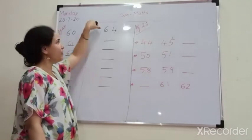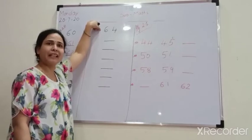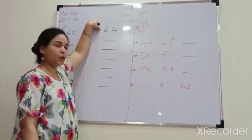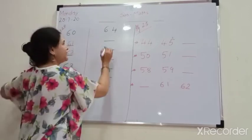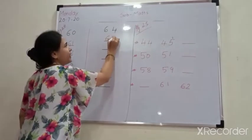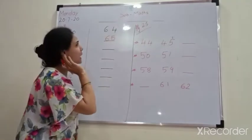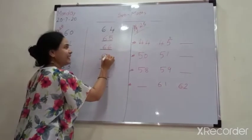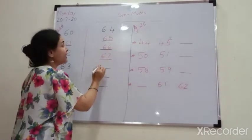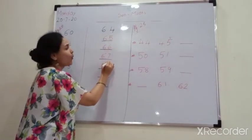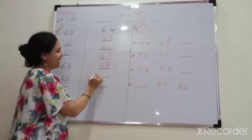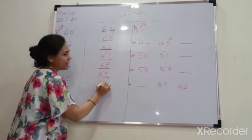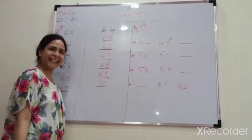Now, next line. First number given to you is 64. So, if I ask you, after 64, which number will come? 65. Then next is 66. Then 67. Then 68 — very good. Then 69. And then, last number will come? 70. Very good.